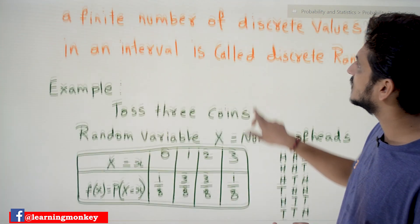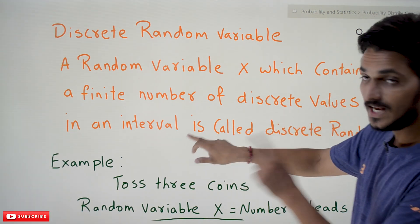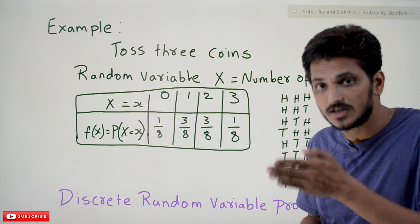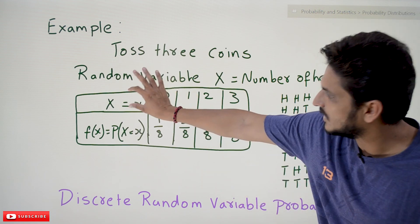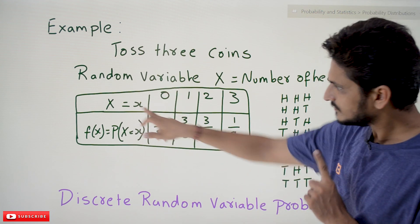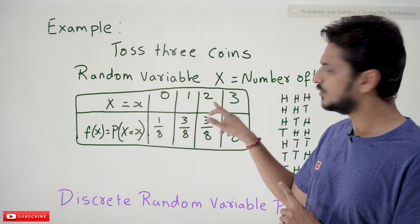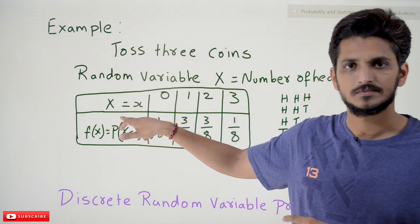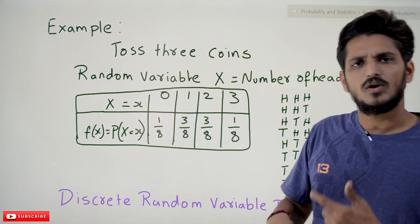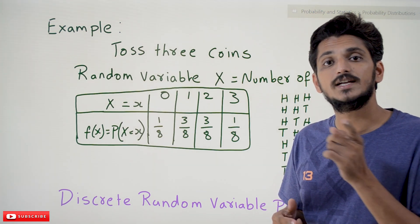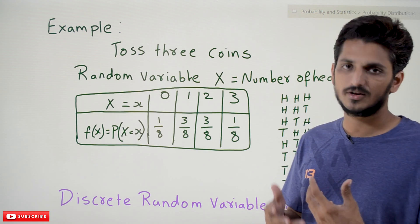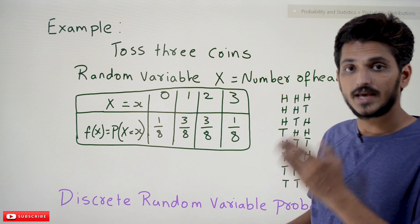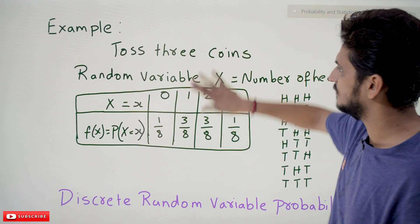Our definition says a finite number of discrete values in an interval is called a discrete random variable. In this interval zero to three, our random variable takes only a finite set of discrete values: zero, one, two, and three. It is not going to take values like 0.1 or 1.1. If all values in the interval were considered, we would call it a continuous random variable. Since it takes only a finite set of discrete values, we call it a discrete random variable.